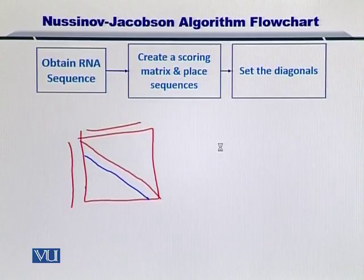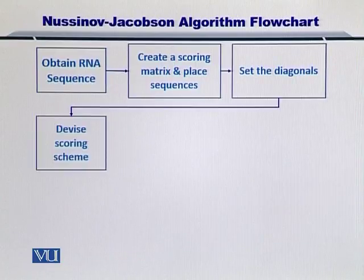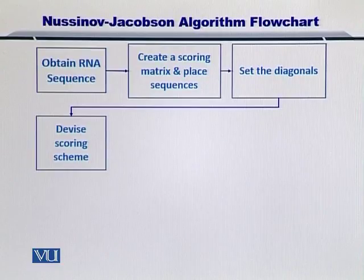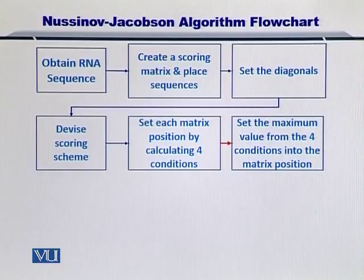Once you have done that, you can move towards computing the scores and filling up the matrix. For that, you will need to devise a scoring scheme. The scoring scheme for the NJ algorithm comprises of looking at the bottom, the left, the diagonal, as well as the two rows beyond the left and the bottom elements. You then set each matrix position by looking at the maximum from these four scoring positions.